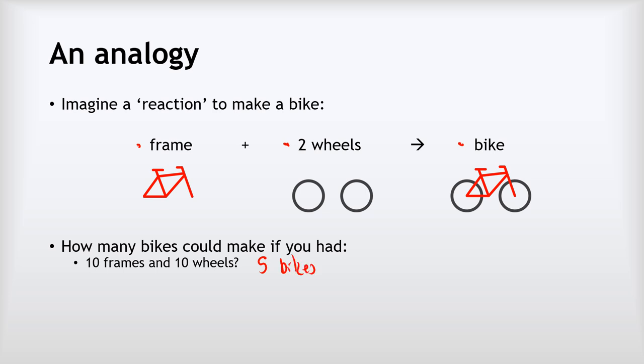We need to do this formally with some mathematics. We work out how many bikes we could make just using the frames, and how many just based on the wheels — whichever answer is smallest is the total number of bikes we can make. With ten frames, ten divided by one gives us enough for ten bikes. With ten wheels, ten divided by two gives us enough for only five bikes. Five is the smallest answer, so we can only make five bikes in total. The wheels are the limiting reactant and the frames are present in excess.